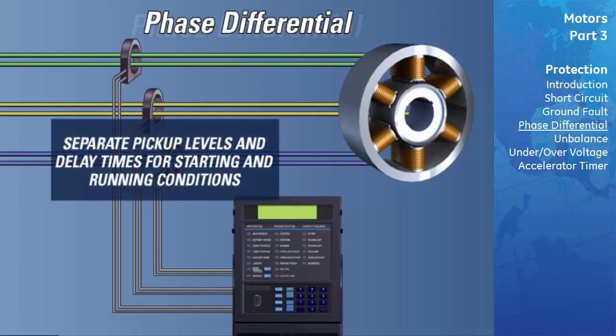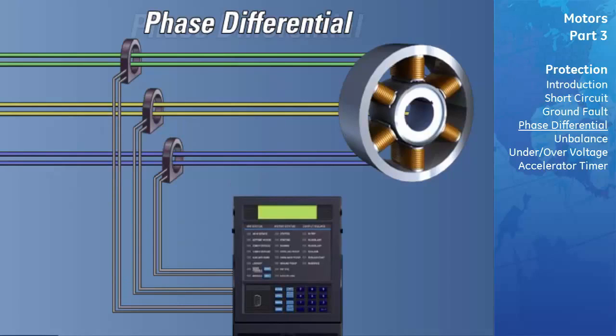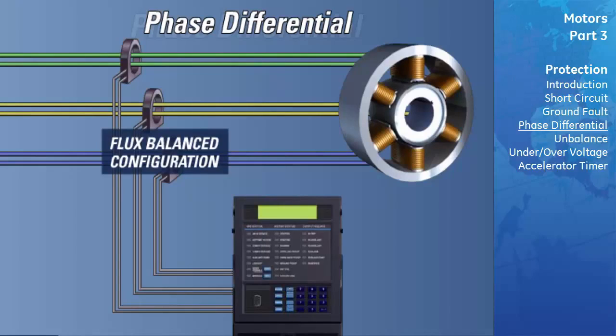Separate pickup levels and delay times are provided for the motor starting and running conditions. In this example, both sides of each of the motor's stator phases are being passed through a single CT. This is called the flux balance configuration and is the most desirable owing to its sensitivity and noise immunity.